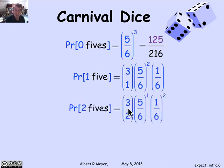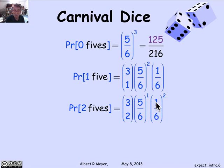Likewise, for two fives, there's three-choose-two times (5/6)^1 — which is one way of choosing the place that does not have a five — times (1/6)(1/6), which is the probability of getting fives in the other places. The probability of three fives is the probability of (1/6) on the first die, (1/6) on the second die, and (1/6) on the third die — simply (1/6)³.